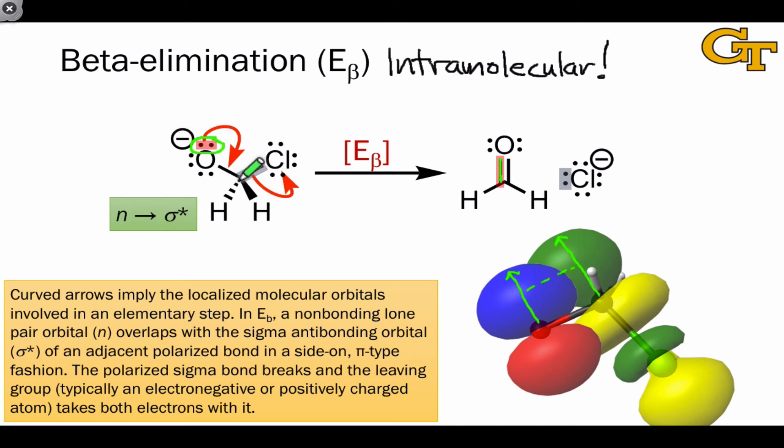In that case, donation of the lone pair to the carbon halogen, for example, antibonding orbital, leads to a beta elimination step. And this is called elimination because a group is eliminated, here the nucleophilic chloride is eliminated, with formation of a pi bond.